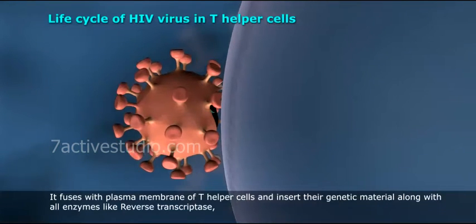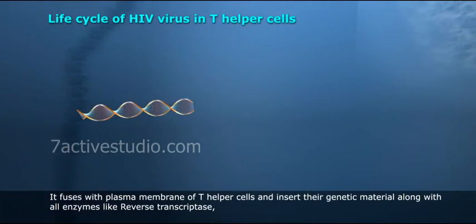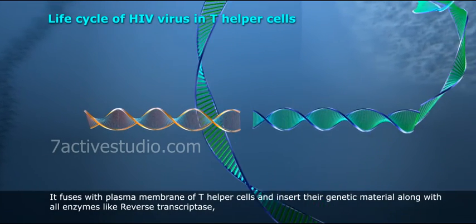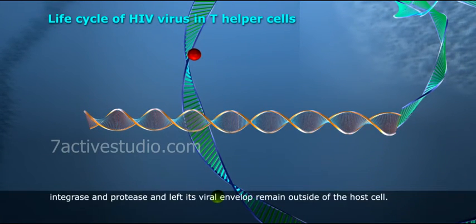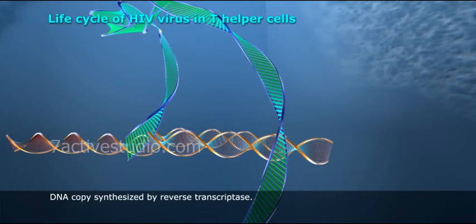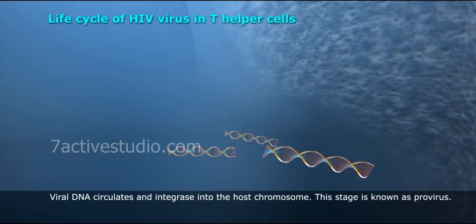The virus inserts its genetic material along with all enzymes — like reverse transcriptase, integrase, and protease — and leaves its viral envelope remaining outside of the host cell. A DNA copy is then synthesized by reverse transcriptase, and viral DNA circulates and integrates into the host chromosome.